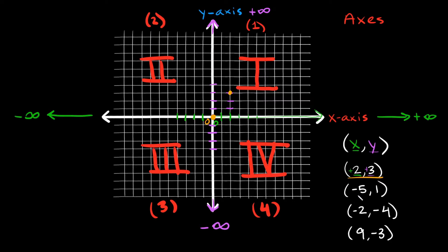Next up is the point negative five comma one. Here we're going to move negative five spaces in the x direction and then one space in the y direction. This is the negative x direction, so we go negative one, negative two, negative three, negative four, negative five. Then we move one spot in the positive y direction — up one. That spot right there is the point negative five comma one.